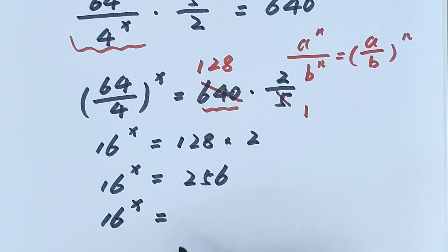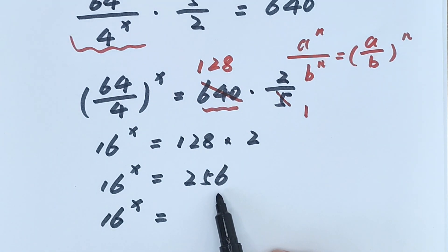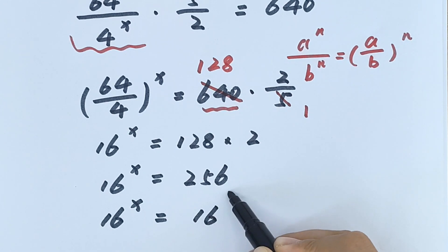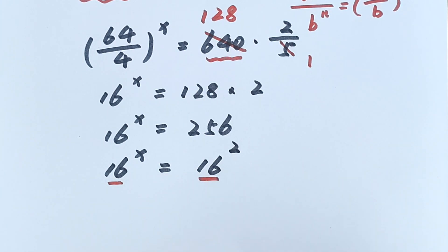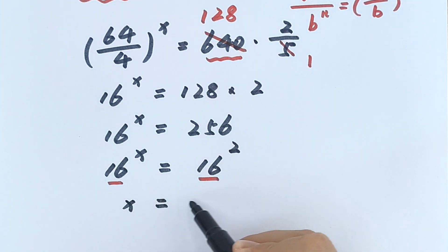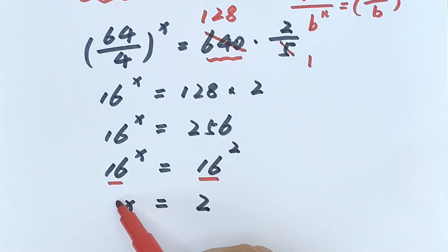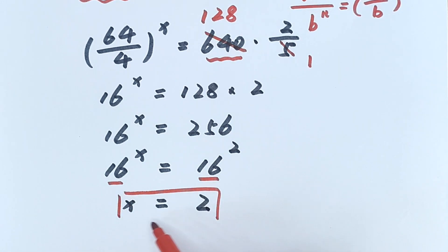Now, 256 is 16 squared, so we have the same base on both sides, which means x equals 2. That is the final answer. Thanks for watching and see you in the next video, bye!